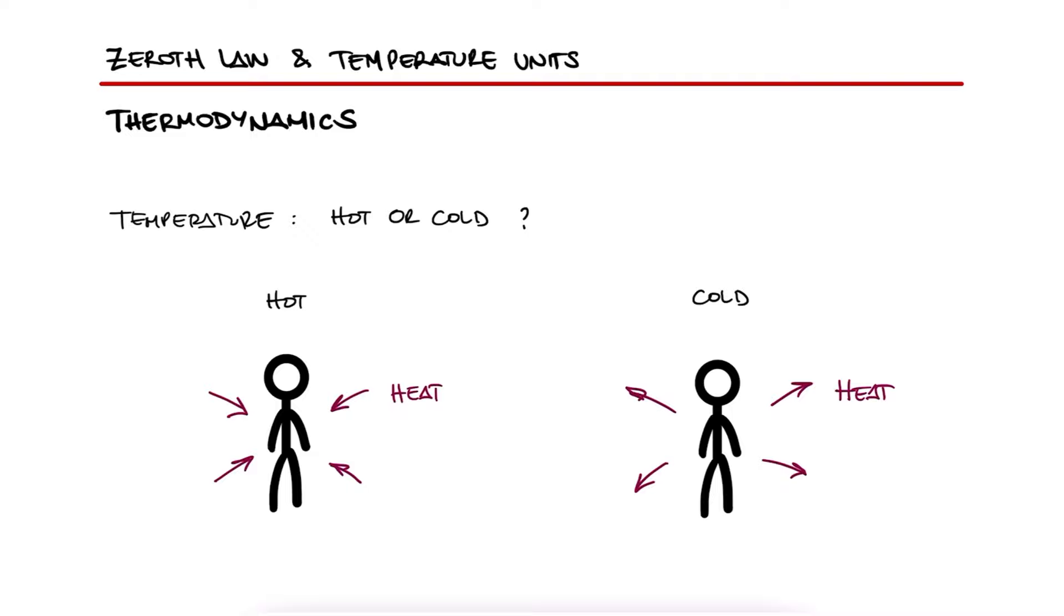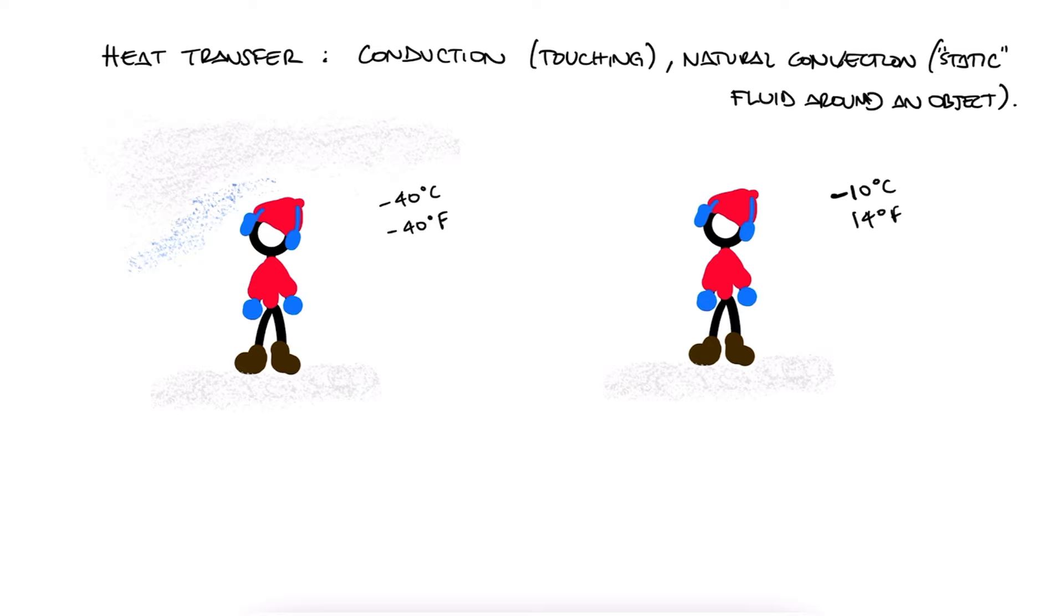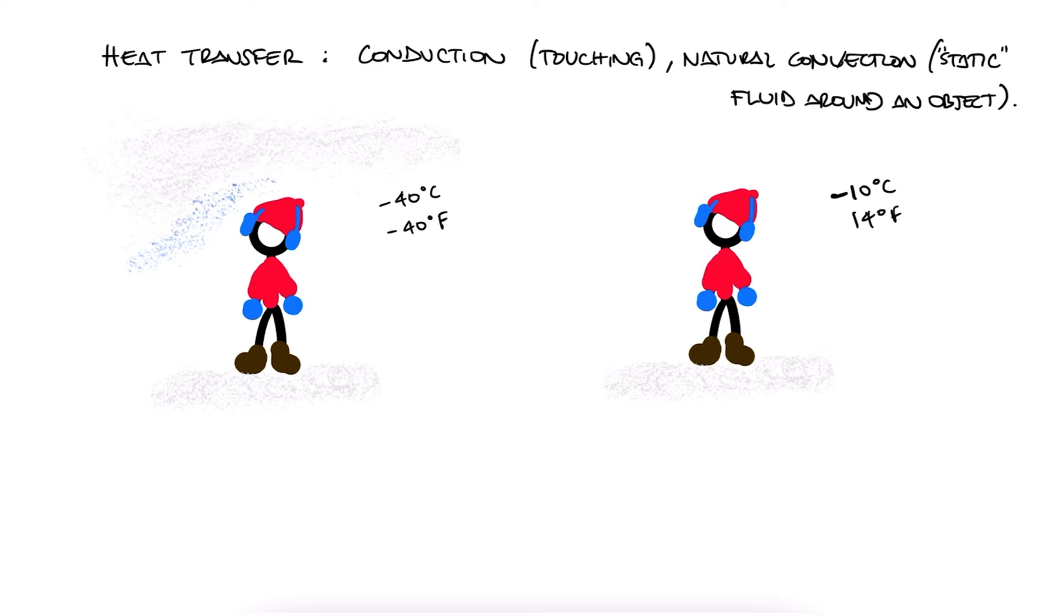When you reach a heat transfer course, you'll learn a lot more about this, but for now, assuming we're touching an object, meaning conductive heat transfer, or just standing in an environment without any wind, meaning natural convection, the amount of heat transfer will be proportional to the temperature difference. So it is correct to say that something feels cold if it has a temperature lower than our body's surface temperature, and its temperature is even lower the colder it feels.